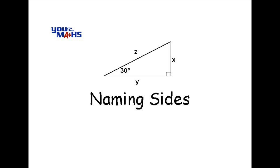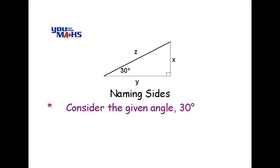This section of the DVD relates to how we name the sides in a right-angled triangle. In any right-angled triangle, the 90 degrees or right angle should be obvious, or it's marked with a square here. There will be another angle given — in this case, 30 degrees — and that will establish the name of the sides.